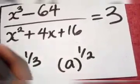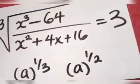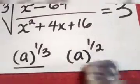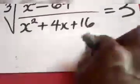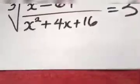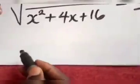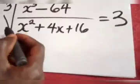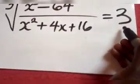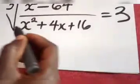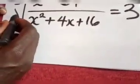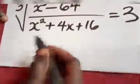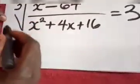So in this one, you see we have a cube root, meaning we are taking this. What we are going to do here is take the cube root of both sides. This is cube root, this is 3. So since it is in cube root, we are going to take the cube of both sides in order to eliminate.